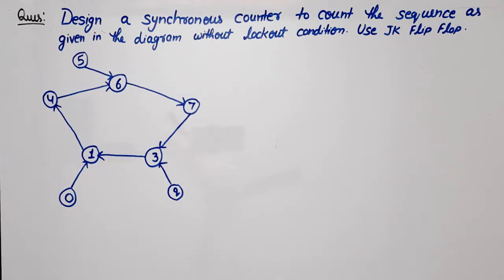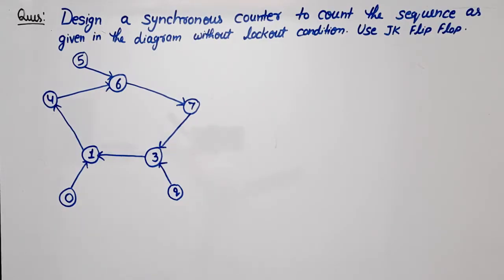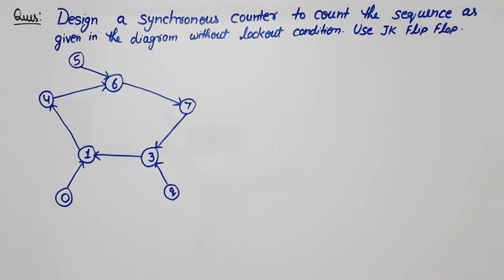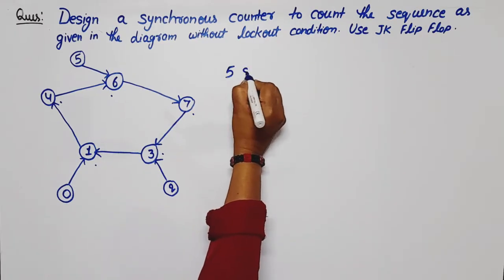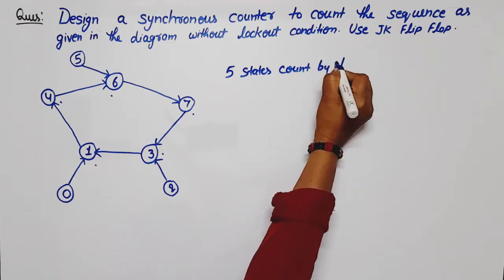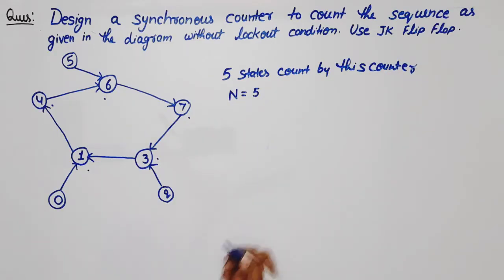In this video lecture of digital electronics or digital system design, I am going to discuss one question of synchronous counter to avoid lockout condition. The question is: design a synchronous counter to count the sequence as given in the diagram without lockout condition, using JK flip-flop. According to the diagram, the number of states counted by this counter is five. So mod, or capital N, is equal to five.